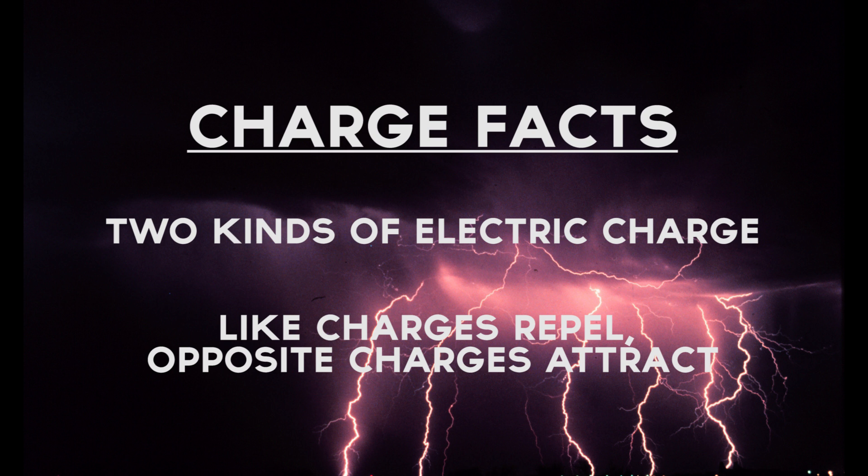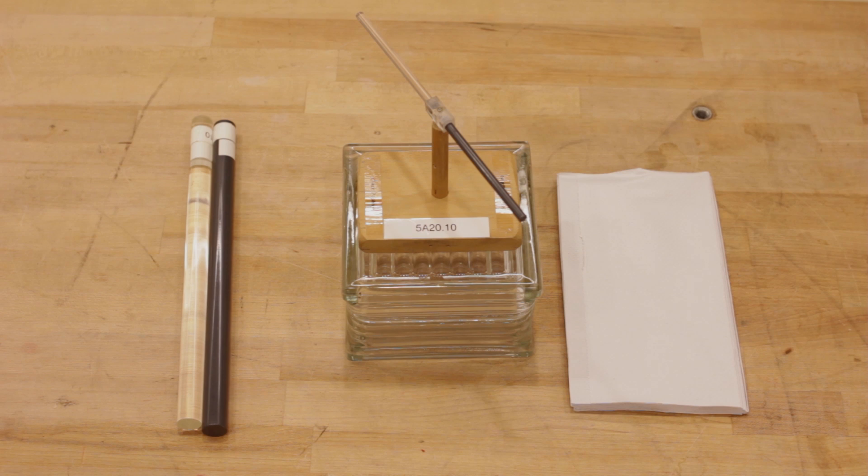First, there are two kinds of electric charge, known as positive and negative. Second, like charges repel and opposite charges attract. We can easily demonstrate these principles by charging different rods of material by rubbing them.